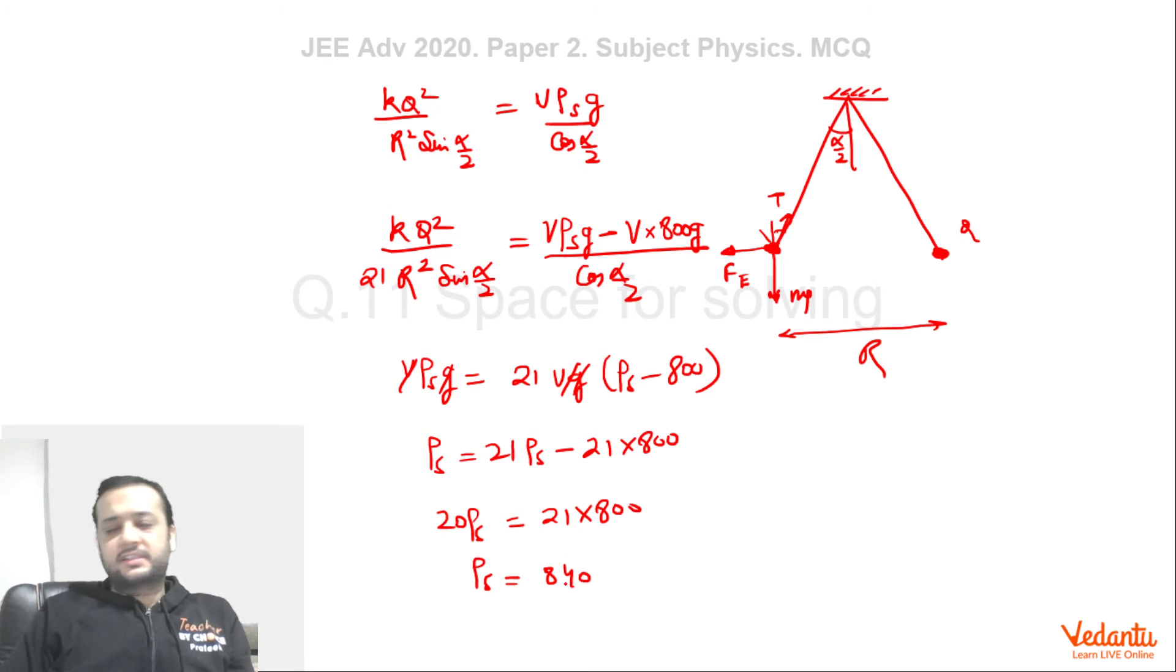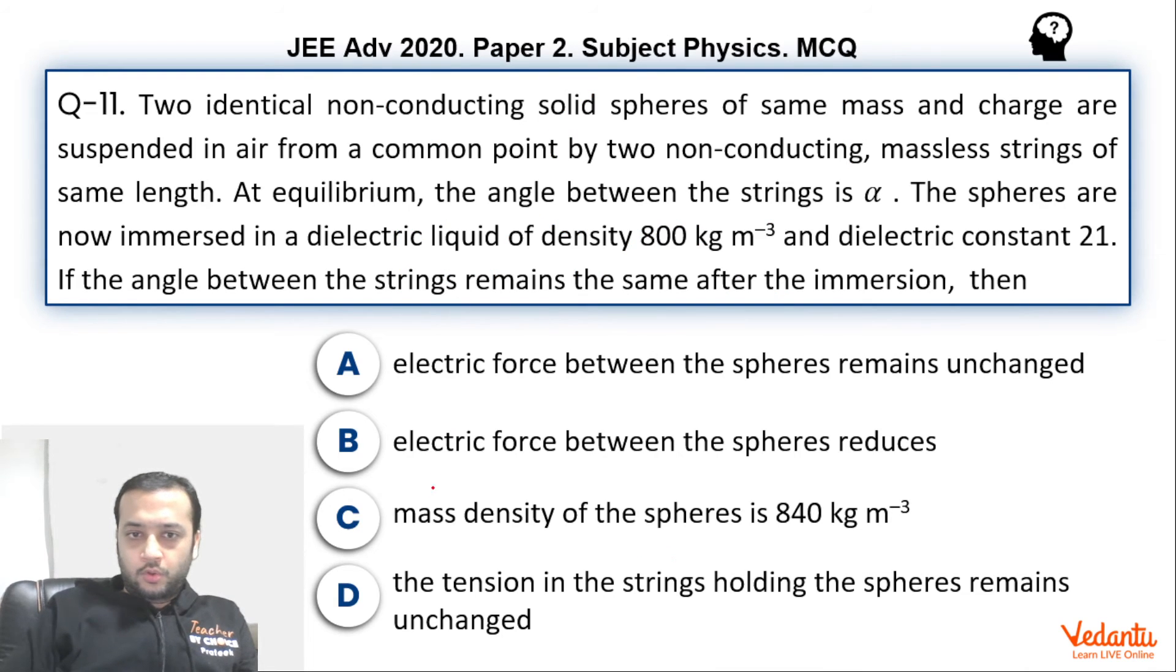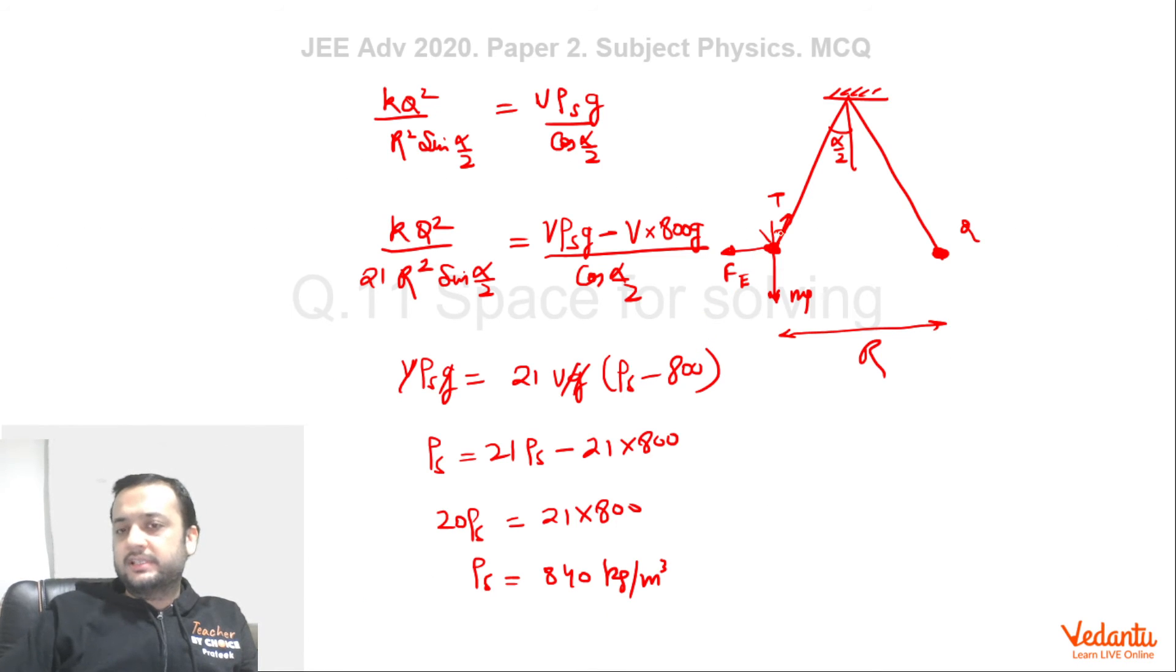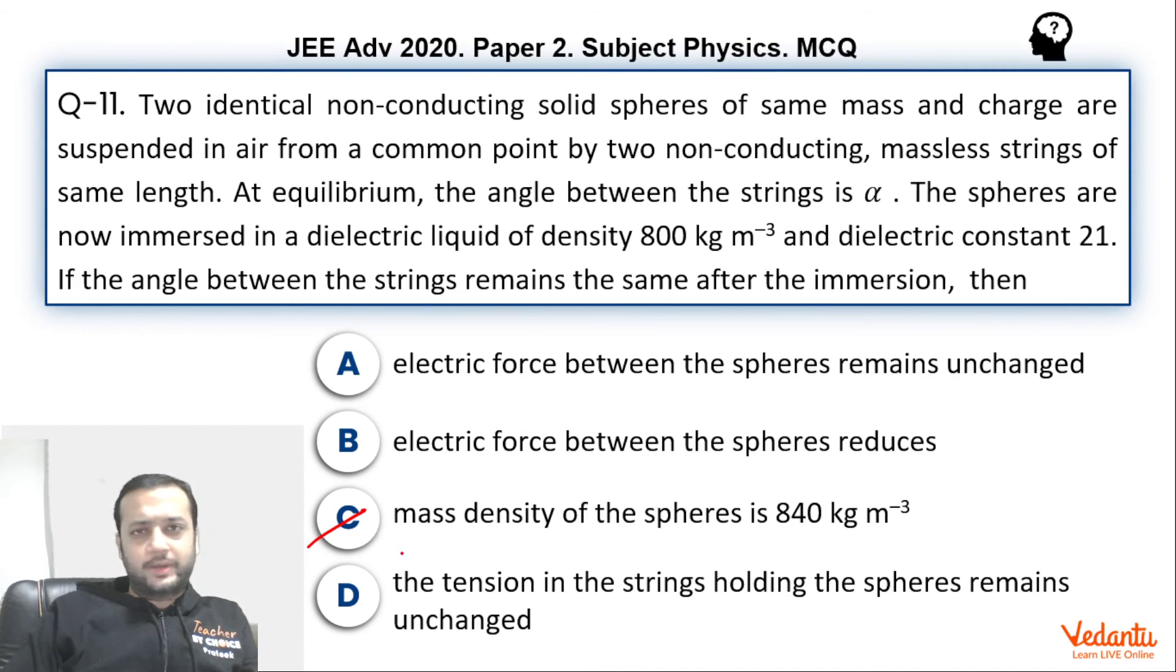Which gives us 840. So density of these spheres is 840 kg per meter cube which is easy to find. And hence option C is correct. Tension in these strings holding these spheres remains unchanged. This will be wrong. Because it is easy to see that initially the tension cos alpha by 2 will be mg. And finally tension cos alpha by 2 will be effective of mg and buoyance. Because of the involvement of the buoyance force tension will have to change its value. So it will not remain same. It will change. So these two options were quite easy.